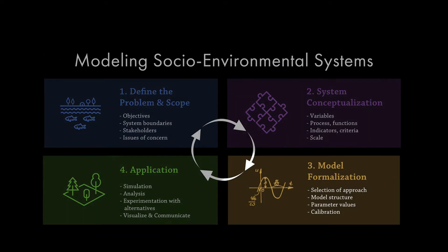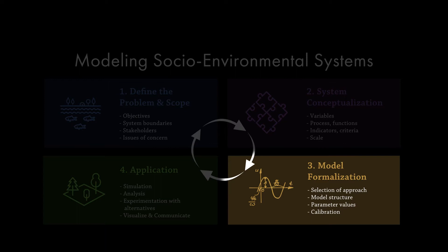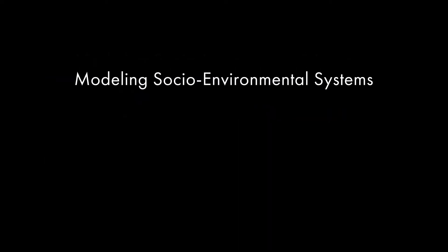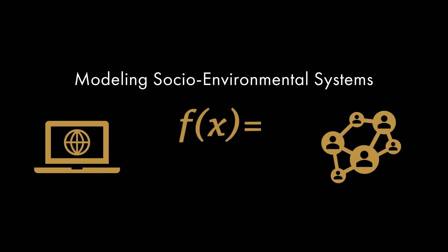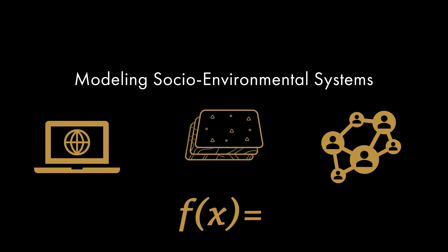This is the formalization phase in the modeling process — the phase when decisions must be made about model structure, parameters, and calibration. We could develop a computer simulation, a network model, or a purely mathematical model. But different approaches require different sorts of information. For example, geospatial models require spatially explicit data on the model components, while network models require defining relationships or connections between the various components.